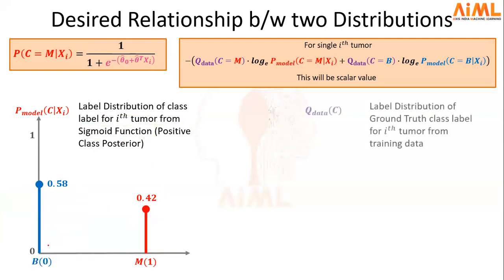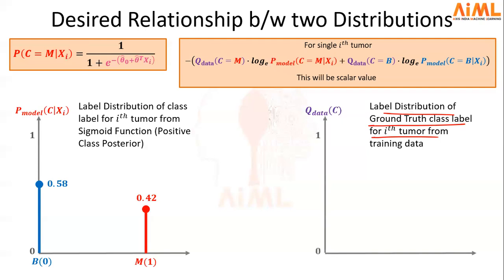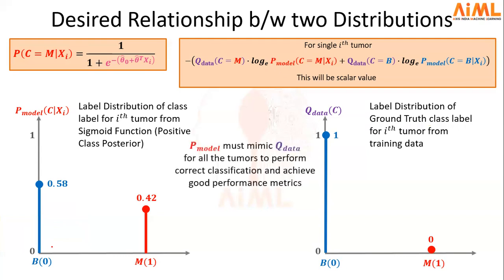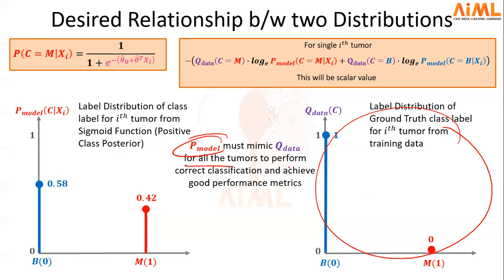On the other side, we have the data distribution Q_data, which is the label distribution of the ground truth class level of the i-th tumor from the training data. Let's see how this label distribution looks like for a specific tumor. Let's say the i-th tumor we selected was benign. So on this benign class, we have 100% probability, and on the malignant class, we have 0% probability. Now, the obvious question which arises is: what should be the desired relationship between the two probability distributions? The answer is pretty obvious — P_model, the model probability distribution for a specific tumor, should mimic the data probability distribution, and this should happen for all the tumors.